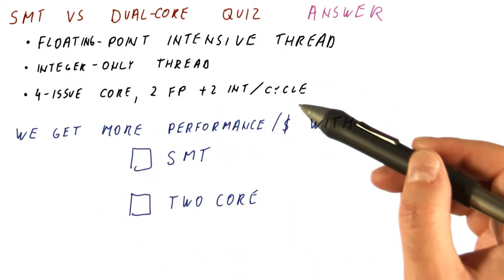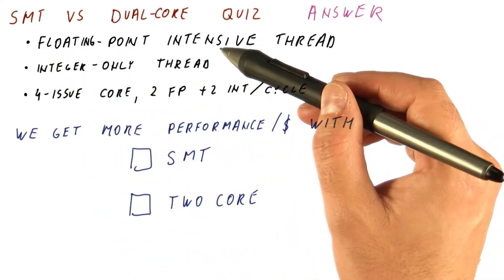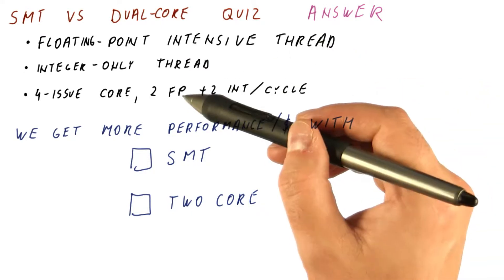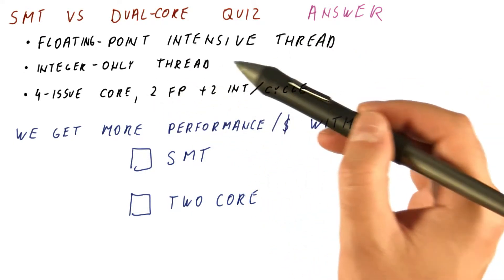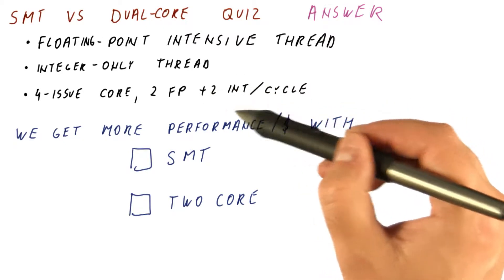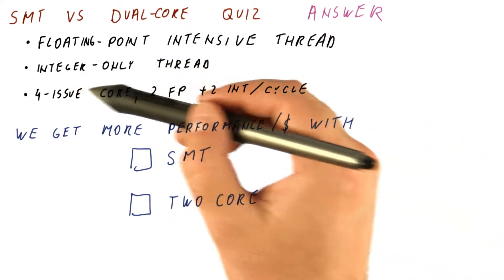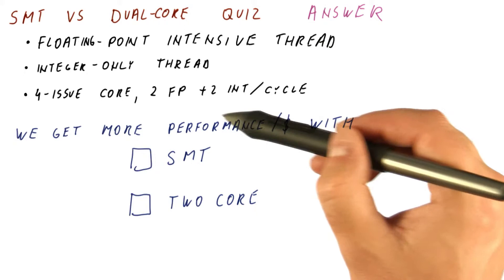Let's answer our SMT versus dual core quiz. We have a floating point intensive thread that uses pretty much these two issue slots and rarely uses these. Then we have an integer only thread that only gets to use these two.